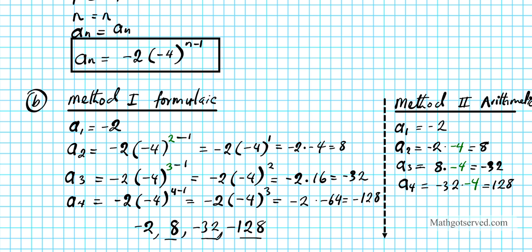Is that what we got in the previous method? The eight matches, negative thirty-two matches, and the last term — let's fix that — it's positive one twenty-eight. The signs alternate because the common ratio is negative. So that checks out and both methods agree.